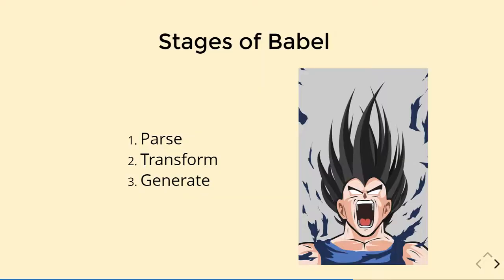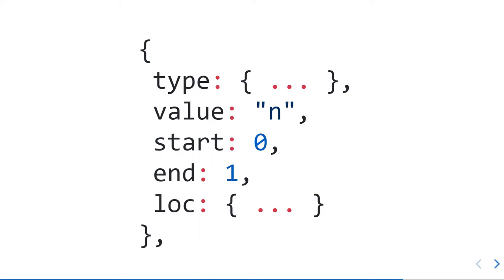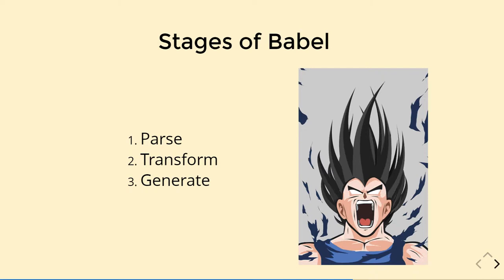Let's talk about the stages of Babel. Babel is like a compiler, so it has two stages. The first one is parse — in this stage it does lexical analysis and semantic analysis. In lexical analysis it takes your code and converts it into small tokens, small objects which have things like type, value, and the location of the token — start and end. The next phase is transform, where all your Babel plugins and Babel transforms run. It's the most important part of Babel. Then it generates the new code from the old code.